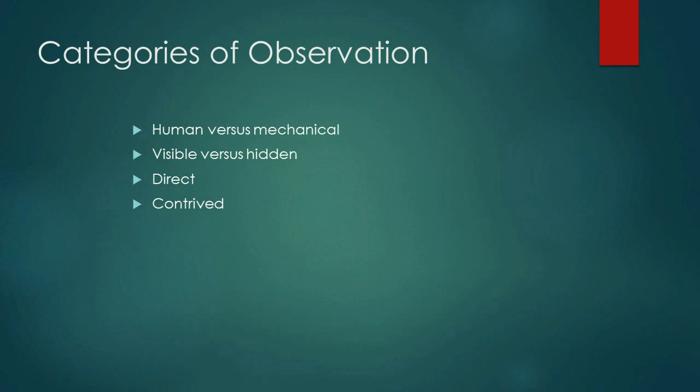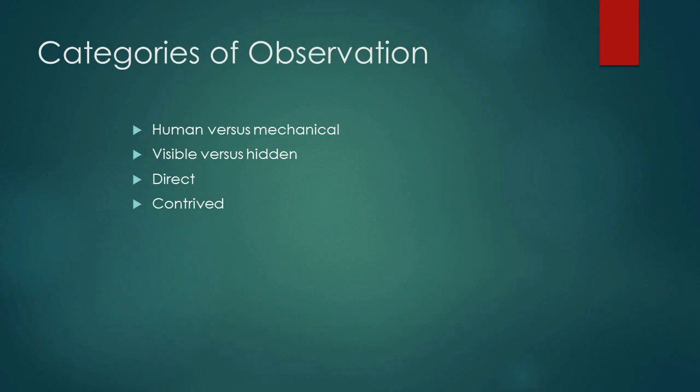In terms of the basic categories of observation, we talk about human versus mechanical. If I sit on a street corner, watch traffic go by and count it, that's a form of human observation. However, I could have a camera doing exactly the same thing — that would be mechanical observation. We also have visible and hidden observation. This camera I'm looking into is very visible. But sometimes you go into buildings and cameras are watching you and you don't see them — that's hidden observation.